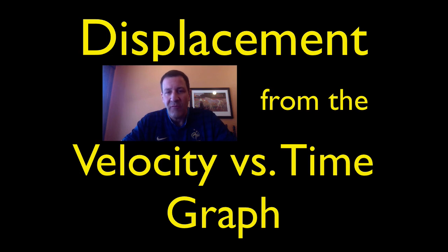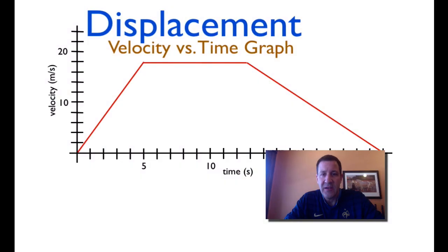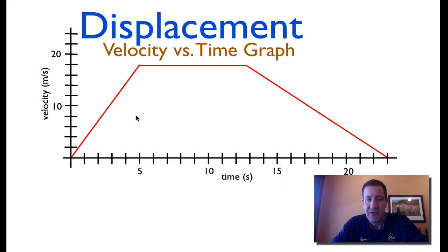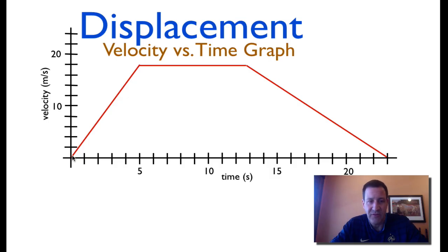In today's video I'm going to go over how to determine the displacement, or the change in position, of an object from its velocity versus time graph. Here is our first velocity versus time graph and the question is: what is the change in position for the time interval from 0 to 24 seconds? We have velocity in meters per second on the y-axis, time in seconds on the x-axis, and a red line showing the motion of the object over 24 seconds.